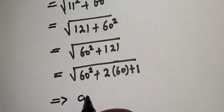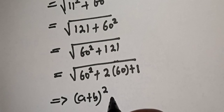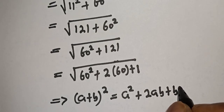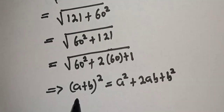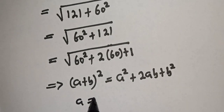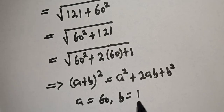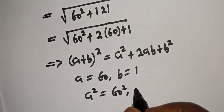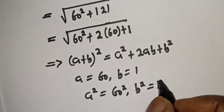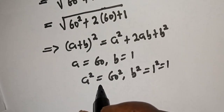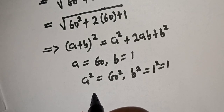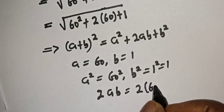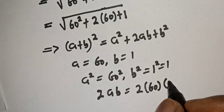If you have (a + b) squared, this is equal to a squared plus 2ab plus b squared. From here, a is equal to 60 and b is equal to 1. Then a squared equals 60 squared, b squared equals 1 squared which is 1, and 2ab equals 2 multiplied by 60 multiplied by 1, which is equal to 2 multiplied by 60.